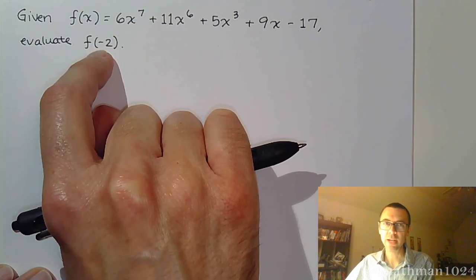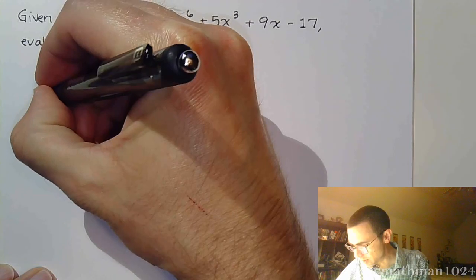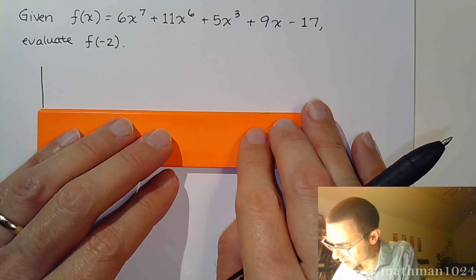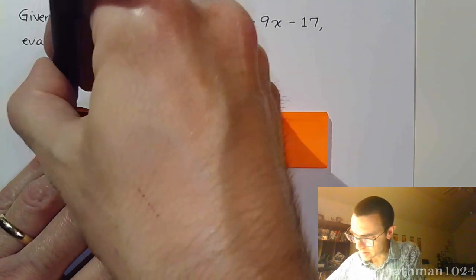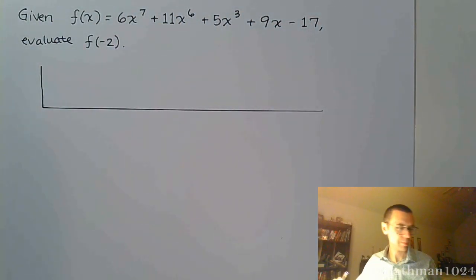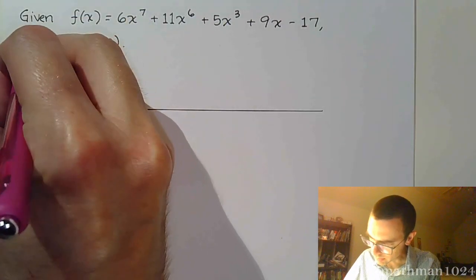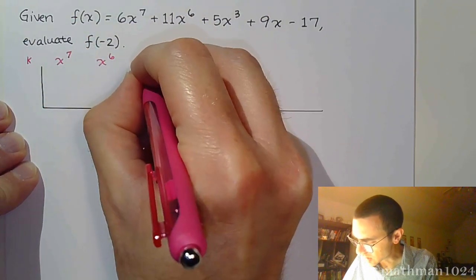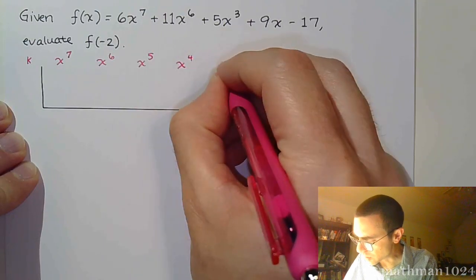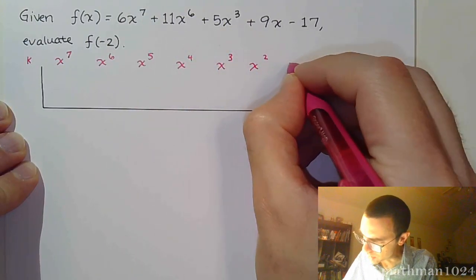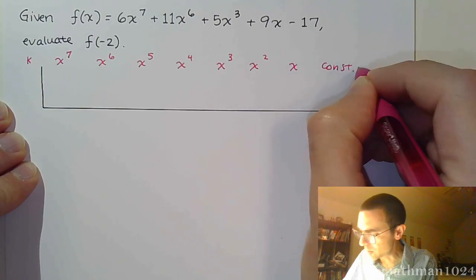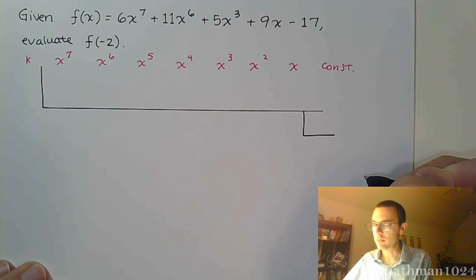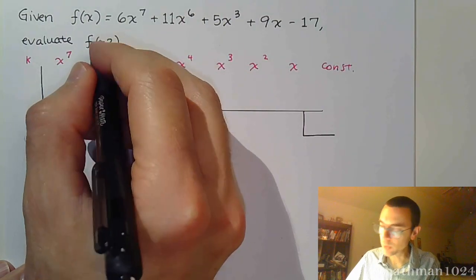And I want to evaluate f of negative 2. So we know that negative 2 is my k value, and that's what I'm going to use for the synthetic division. We put our headings here. This is x to the 7, and again count it down: 7, 6, 5, 4, 3, 2, 1, and then the constant term. So we know that this number over here is going to be our answer — the answer we care about. k is exactly what you see, so we're going to do negative 2.